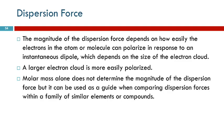How strong the dispersion force is depends mostly on how easy it is to make the electron cloud out of balance. The larger the electron cloud, the further those electrons are from the nucleus, the easier it is to be lopsided. So larger atoms have stronger dispersion forces than smaller ones — the electron cloud is more easily polarized. Think big, flabby, floppy thing — it can get lopsided more easily than something small and tight.